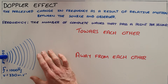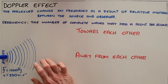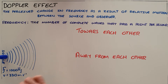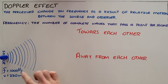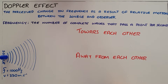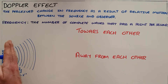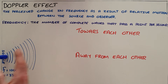Here we have a source — note that a source can be anything emitting a sound or any kind of wave. In this case we have a source that is emitting a frequency of 1000 Hertz, which means there are 1000 waves passing away from the source per second.